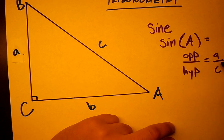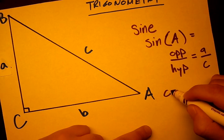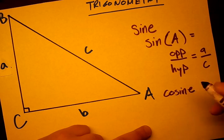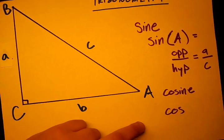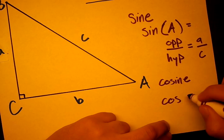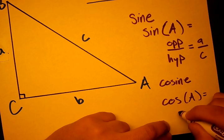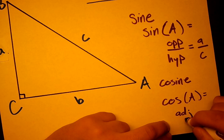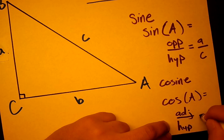Next one is cosine, spelled like this and abbreviated c-o-s, cos. So cosine of A equals the side adjacent to A over the hypotenuse.